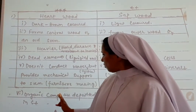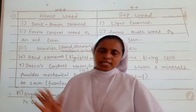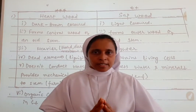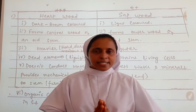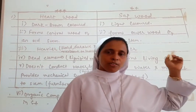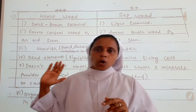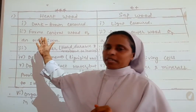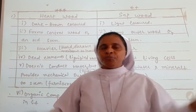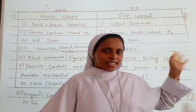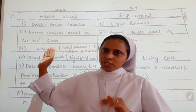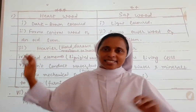Organic compositions are deposited in the hardwood. So the differences between hardwood and sapwood are clear: hardwood is dark colored and forms the central part, while sapwood is light colored and forms the outer part. Hardwood is heavier, hard, durable, and resistant towards insects, while sapwood is lighter.